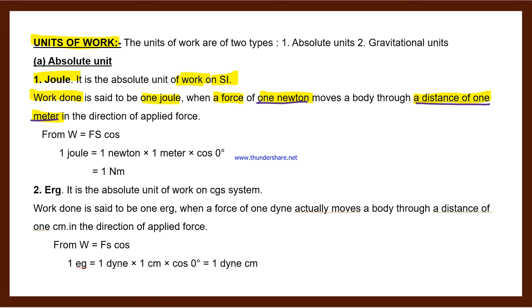When such force is applied to any object, one newton force should be there and displacement should be one meter in the direction of applied force. So we write the formula W = FS cos theta. F is in newton form, one newton, displacement is one meter, and we write cos zero degree.